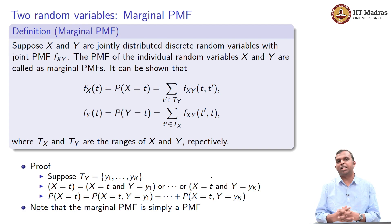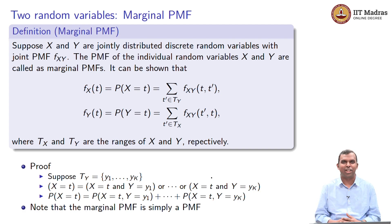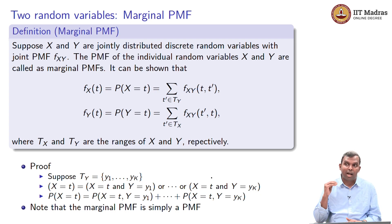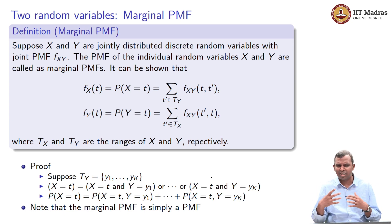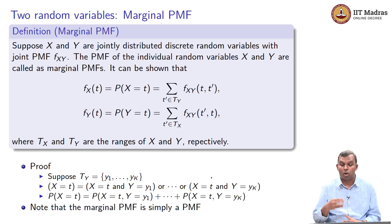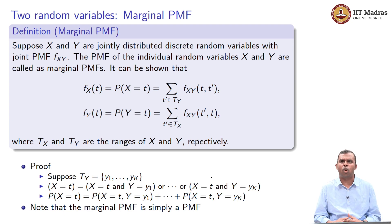We are studying two random variables together in a probability space. What are all the different types of distributions of interest? We saw the joint PMF. Now we are going to look at what are called marginal PMFs when you look at multiple random variables. This word 'marginal' will show up a lot, and it is very important to understand what marginalization is. You will hear it a lot when you study probability and statistics.